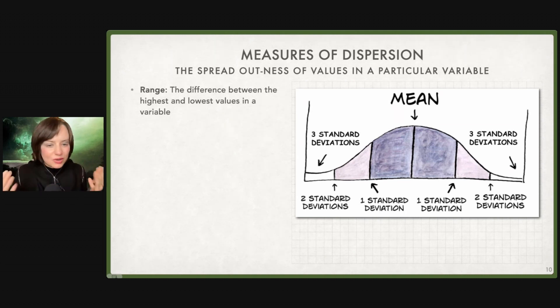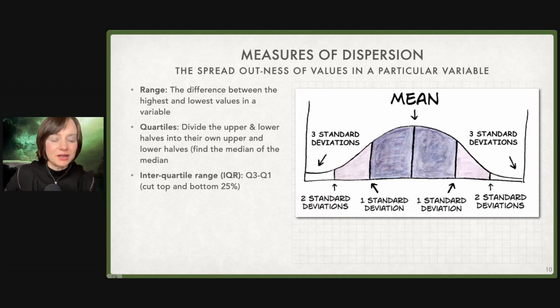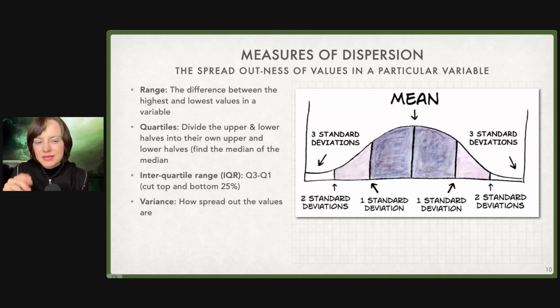We could actually talk about this in a number of ways. The simplest is the range, the difference from the highest and lowest values in a variable. There are quartiles. I tend not to talk about quartiles. My understanding is people in finance like to talk about quartiles. Where we divide the upper and lower halves, we find the median, and then we find the median of that. And then we can talk about what's in those quartiles as a way of talking about how spread out the data is. Specifically, you'll see an interquartile range, quartile three to one. So cut the top and the bottom. What's the range of the kind of middle half?